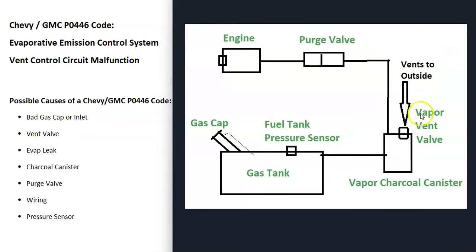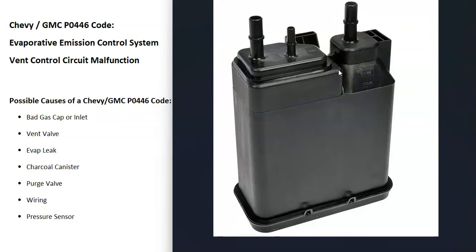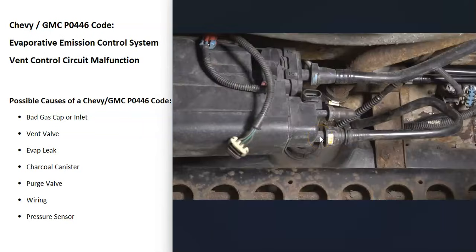The most common cause of this code is something going on with the vent valve. This is located underneath the vehicle with the charcoal canister, near the gas tank. Sometimes the vent valve is separate from the charcoal canister, but quite often it can be built into it — it will vary depending on the vehicle, year, and make. The next thing to do is locate that vent valve, check it out, test it, check the wiring, and be sure there are no opens, shorts, or bad connections.